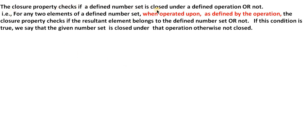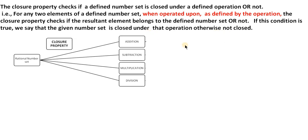The closure property checks if a defined number set is closed under a defined operation or not. That means for any two elements of the defined number set — any two rational numbers — when operated upon by the defined operation, the closure property checks if the resultant element belongs to the defined number set or not. After adding two rational numbers, is the sum necessarily a rational number? Yes, it is.